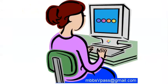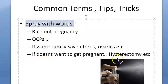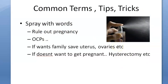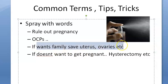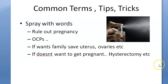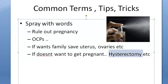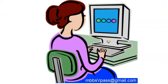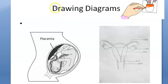Tips and tricks: always try to rule out pregnancy when a woman comes with amenorrhea. OC pills can solve many problems - they regulate cycles, though they have their own side effects. If the patient wants a family, try to save the ovaries and uterus. In post-40 women who have completed their family, hysterectomy may be suggested - but be aware that many examiners dislike it when students suggest hysterectomy as the solution to everything.